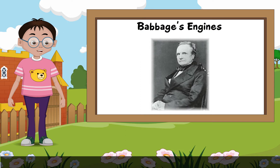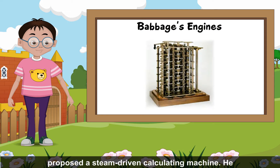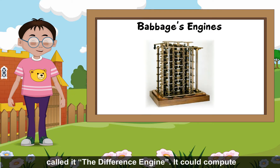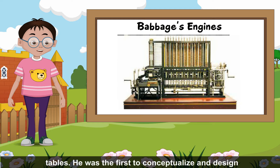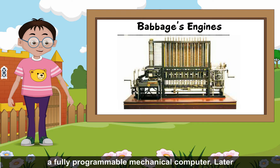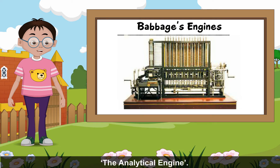Babbage's Engines: In 1830, English mathematician Charles Babbage proposed a steam-driven calculating machine. He called it the Difference Engine. It could compute tables of numbers like logarithms and navigation tables. He was the first to conceptualize and design a fully programmable mechanical computer. Later, he developed another machine that he called the Analytical Engine.